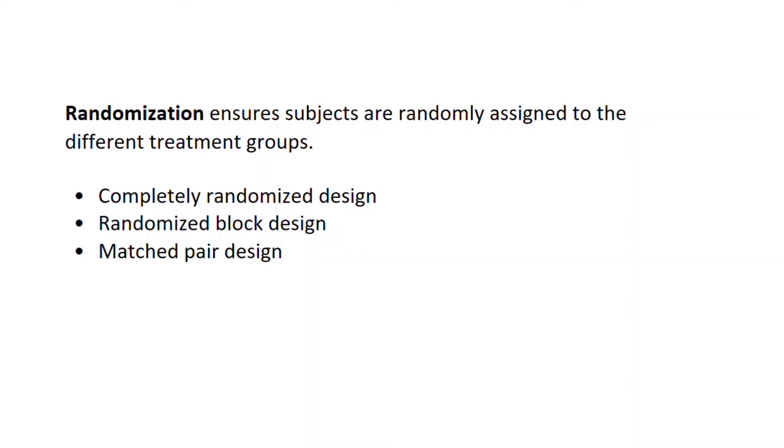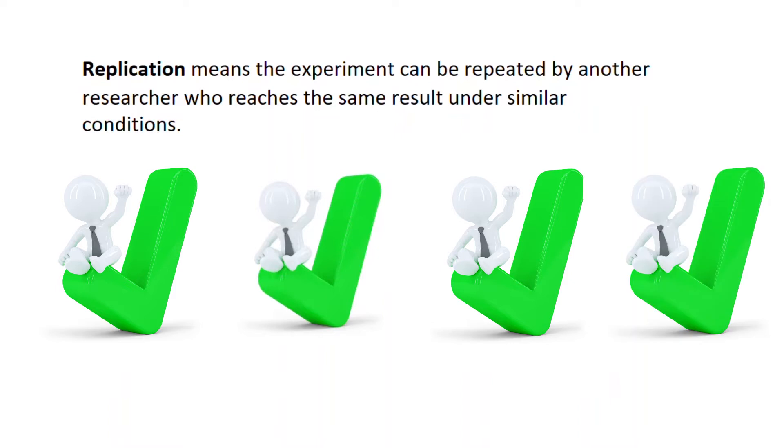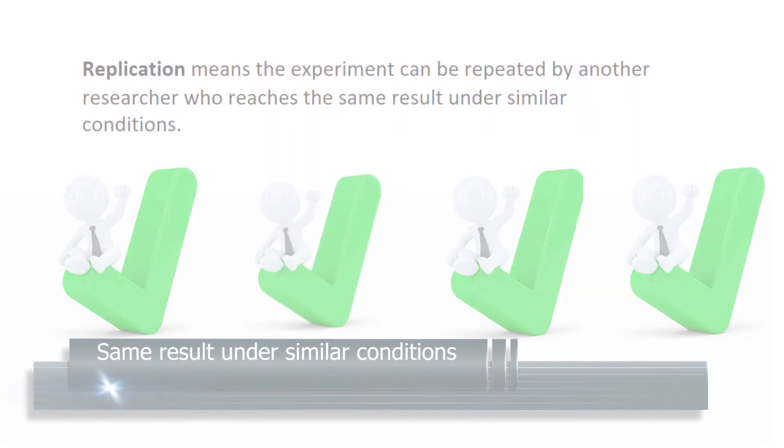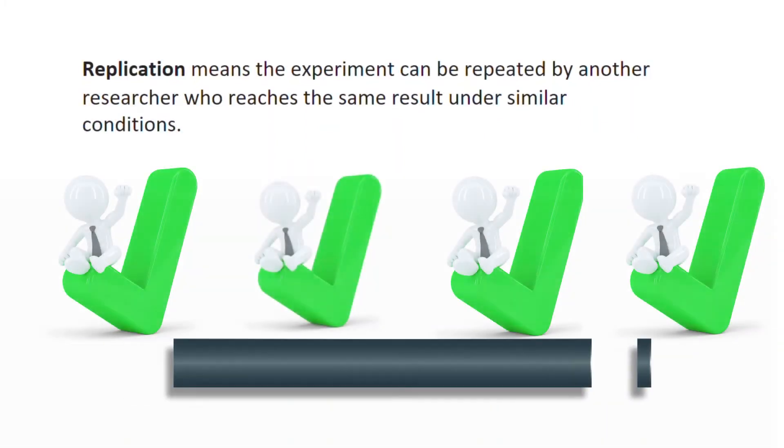You want to make sure that it's a random assignment though. That's a very important part of a good design. Replication means that we can repeat an experiment under the same or similar conditions in a different location by a different researcher and get the same result, as long as the conditions were the same. And the more we can do that, the more we believe our result.